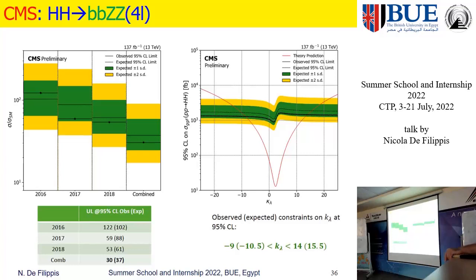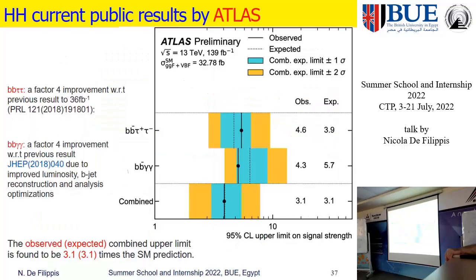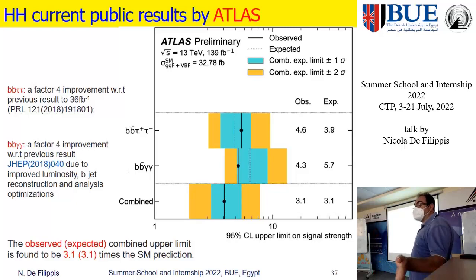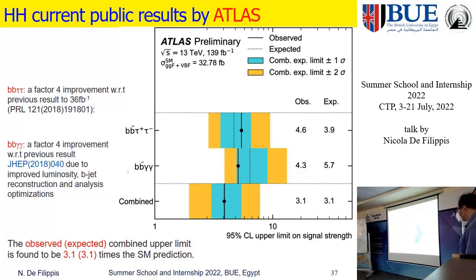Essentially, what we got from this research is an upper limit on the cross-section for production of about 3 times the standard model. We are not yet sensitive to the standard model prediction. We are constraining kappa_lambda in a narrow range. The search for double Higgs production will shed light on the shape of the Higgs potential and reveal new physics through the effects of anomalous couplings.